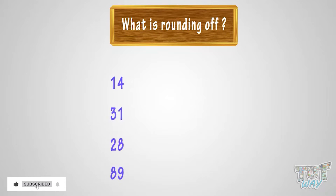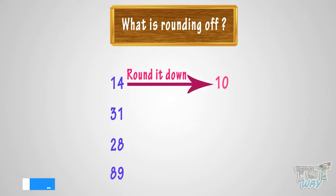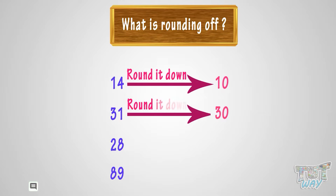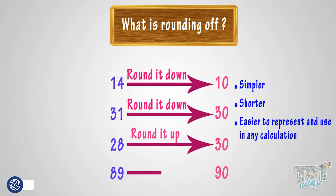Rounding is to replace a number with another one that has a value approximately equal to our original number, but is simpler, shorter, and easier to represent and use in any calculation.